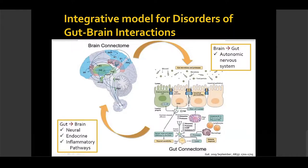The networks made up by multiple cells in the gut, including the gut microbiota, form the gut connectome. The brain-to-gut interaction is mediated by the autonomic nervous system, and the gut-to-brain interaction is mediated by neural, endocrine, and inflammatory pathways. All of these interactions are very close-knit and evolve into a cycle that, when affected by different factors, leads to disease.